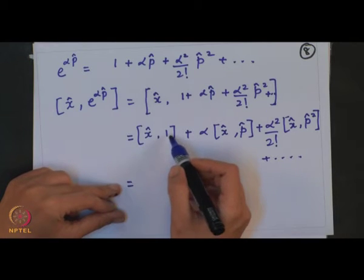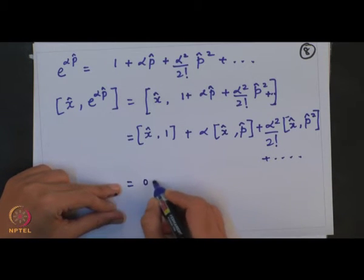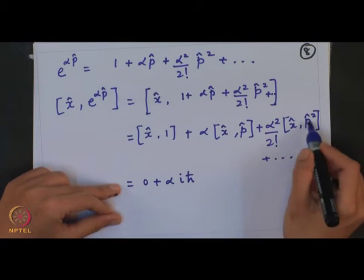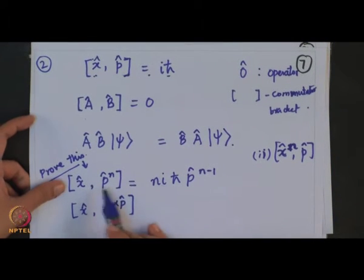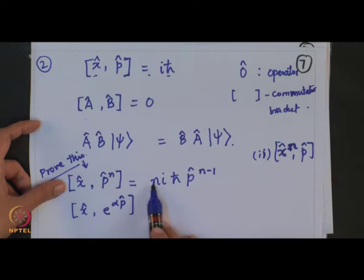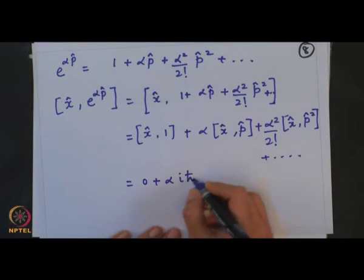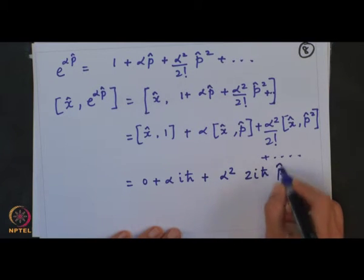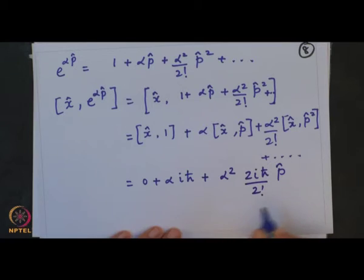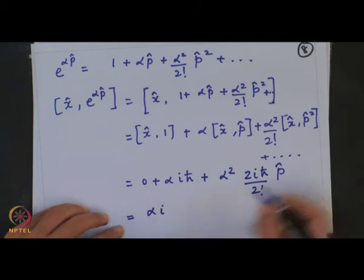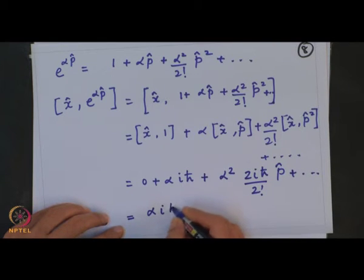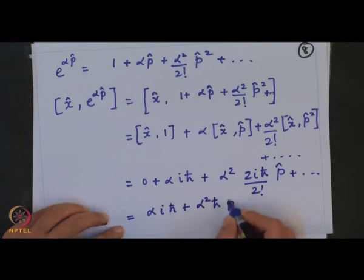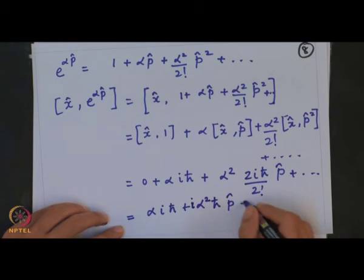Remember the commutator of an operator with a number always gives 0. The first term is 0, plus α·iℏ for the second term. For the third term we use [x̂, p̂ⁿ] = n·iℏ·p̂^(n−1), so with n=2 we get 2iℏp̂. Then the term with α² gives (α²/2!)·2iℏp̂, so the 2 cancels and we get α²iℏp̂.